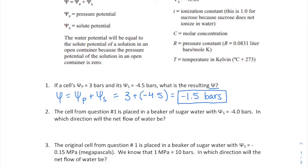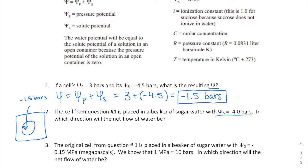For question two, they ask: if that cell from question one is placed in a beaker, what direction will the net flow of water be? I'll draw this scenario — here's my cell in a beaker. The cell has a water potential of negative 1.5 bars, and we're given the solute potential of the sugar water in the beaker. To know which way water will move, I need to determine the water potential of the solution.